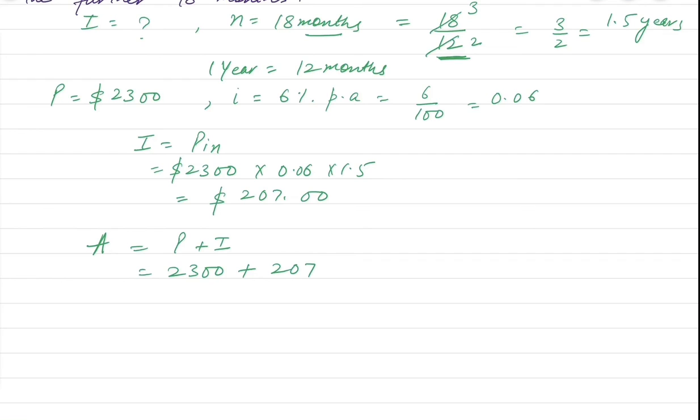P, $2,300 plus $207, which we have calculated at the top. And we got $2,507. So in this way, we can say that the balance, which is after the invested amount, we have again invested, which is the reinvest.